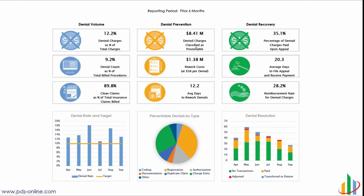In the second category, we're really focused on what the denials cost and what we could potentially prevent — those high-impact denials. In this sample, we've got quite a bit of denied charges that are impactful. We can even assign costs to reworking those denials: what's the cost to our organization to rework them, and what's the average time? We have a third area showing registration denials versus charge entry — two key areas that jump right out. What we really want to get into is denial recovery, and I'd like to explain how the PDS tool makes it easier to understand whether we're getting paid after a denial.